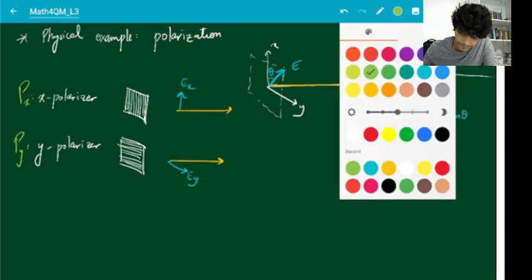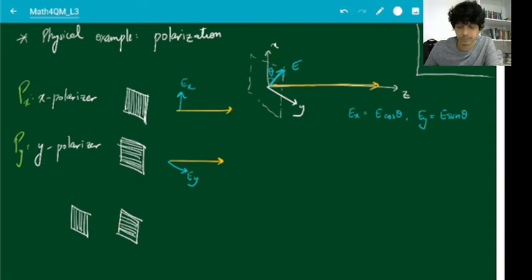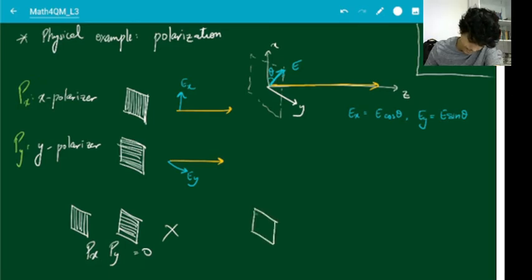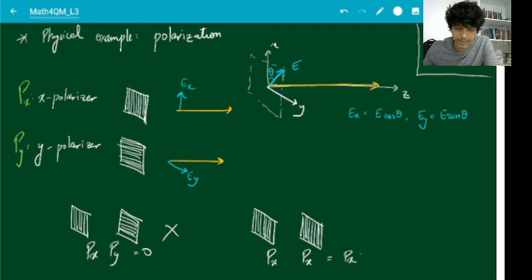Or you can have a y-polarizer, which allows only the y-component of the electric field to survive — the x-component gets cut off. So the x-polarizer acts like a projection operator in the x-direction, and the y-polarizer acts like a projection operator in the y-direction. If you first put an x-polarizer and then a y-polarizer, nothing will go through — that is saying P_x P_y = 0. Whereas if you put an x-polarizer followed by another x-polarizer, the second one does nothing — a physical example of projection operators.